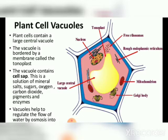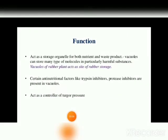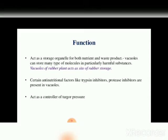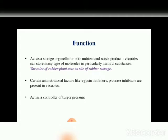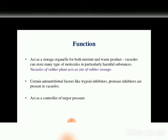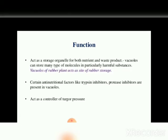Sap vacuoles store and concentrate waste products. The vacuole stores materials like water, food, nutrients, and waste products. It can break waste products into small pieces so that they cannot hurt the cell.